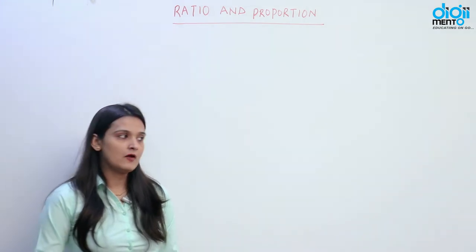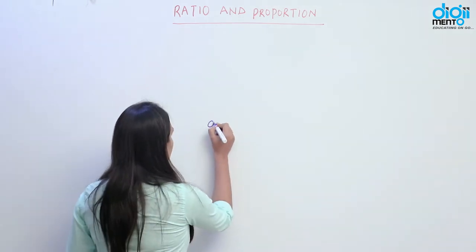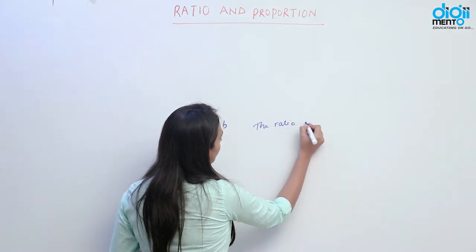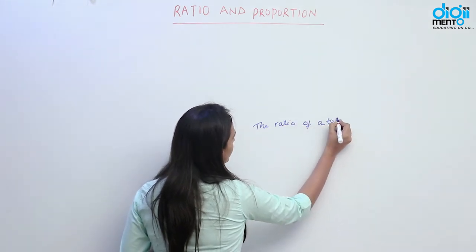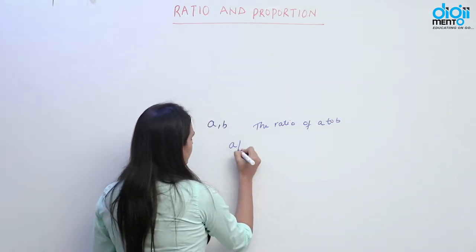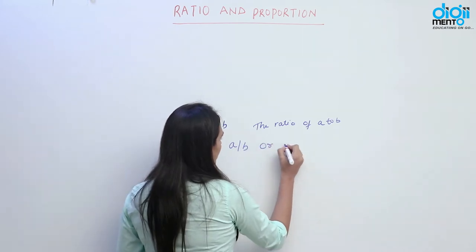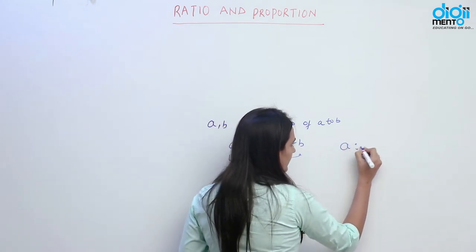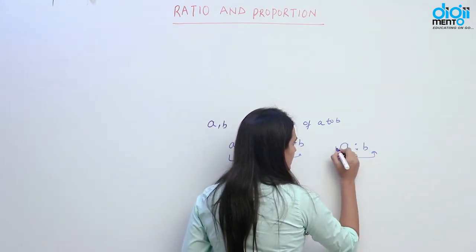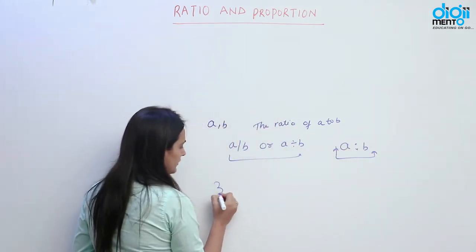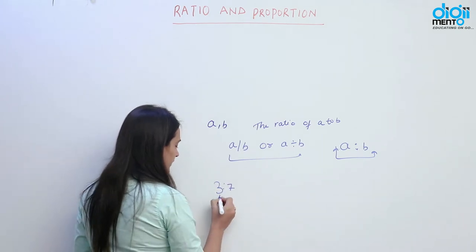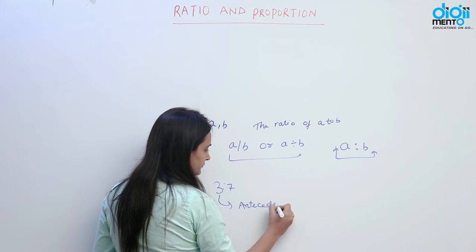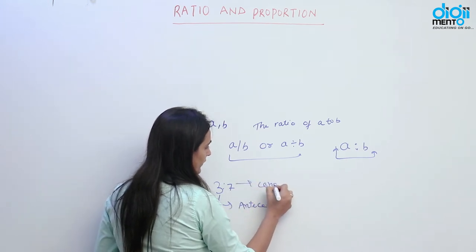Suppose if we have two numbers like A and B, the ratio of A to B, or A divided by B, is denoted as A ratio B. For example, 3 ratio 7. Here, the term 3 will represent the antecedent and 7 will represent the consequent.